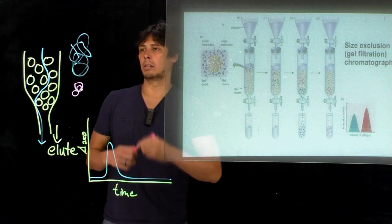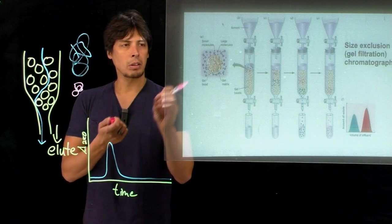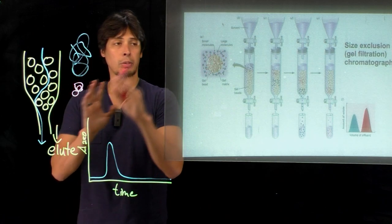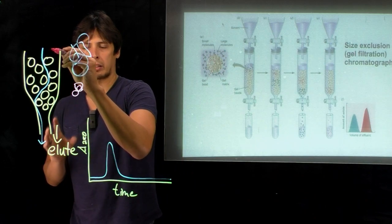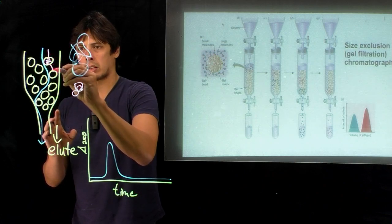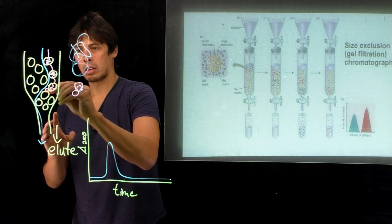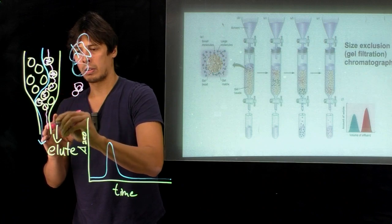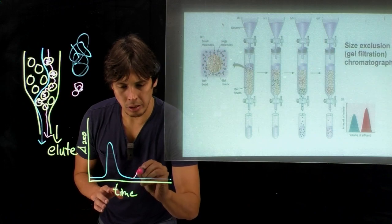Now, what happens to the red protein? Since it's smaller, and if it's small enough to fit inside the pores of the beads and enter these channels, it will have a longer path length through the column. It will go through these tunnels and channels, which will cause it to have a longer pathway through.